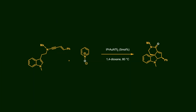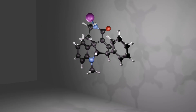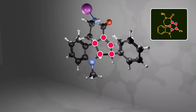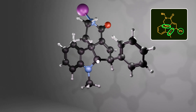In 2018, the groups of Hong, Mao, and Chen designed a beautiful reaction based on ynamide chemistry to access highly complex tetracyclic spiroindoline structures. Let's take a look at the 3D model of this compound, where a 5-membered ring is fused to the indole moiety, and a 6-membered ring forms the spiro-skeleton of the molecule. Additionally, all substituents are installed in a stereospecific manner.